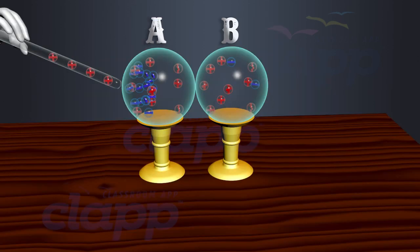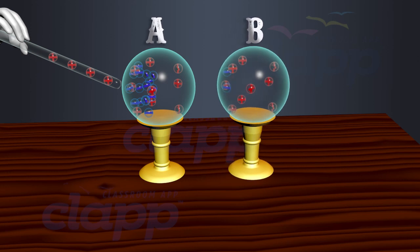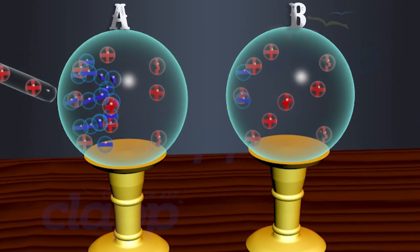Separate the spheres by a small distance while keeping the glass rod near Sphere A. The two spheres are found to be oppositely charged and attract each other.